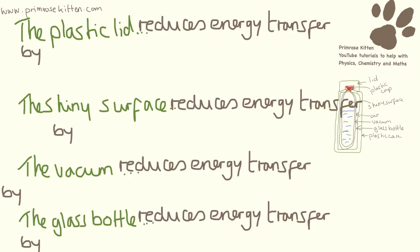So the plastic lid reduces energy transfer by, the shiny surface reduces energy transfer by, the vacuum reduces energy transfer by, and the glass bottle reduces energy transfer by. Now all we need to do is to pop in the relevant answers and just expand upon it a little bit so we can make sure we get those top marks.